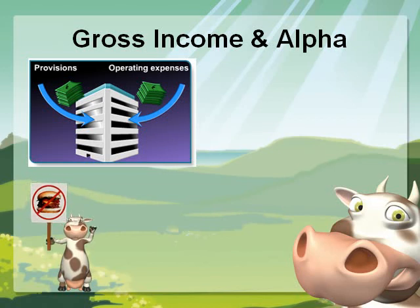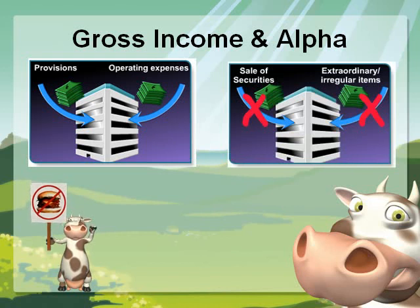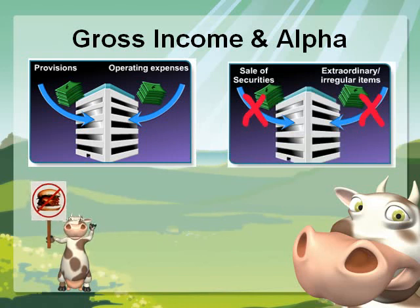In other words, gross income should exclude realized profits or losses from the sales of securities classified as held-to-maturity and available-for-sale, because the intention is not for trading purposes and their sale does not represent sustainable income from normal business. Gross income should also exclude any extraordinary or irregular items, as well as income derived from insurance claims.